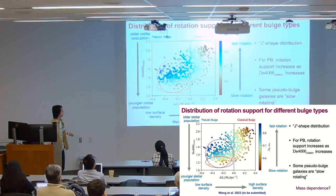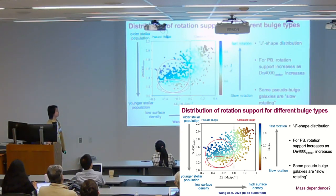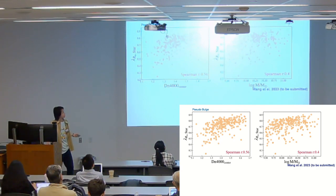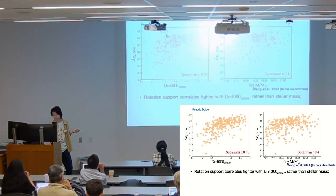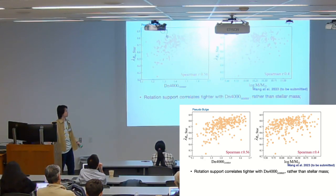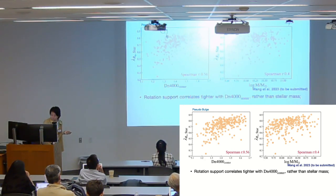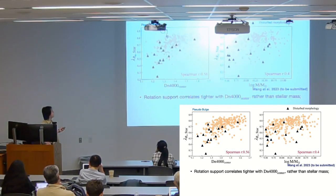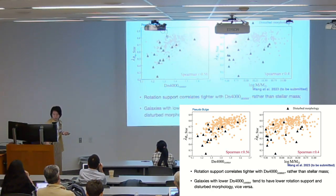A simple explanation might be that galaxies increase their lambda and d4000 together as they increase in mass — would this just be mass dependence? We plot pseudobulge galaxies in two spaces: lambda versus central d4000 on the left, and lambda versus stellar mass on the right. From the distribution and Spearman correlation coefficients, lambda correlates more tightly with d4000 than with stellar mass. So mass dependence alone cannot explain it, and we need another scenario that can better link central stellar population and rotation support.